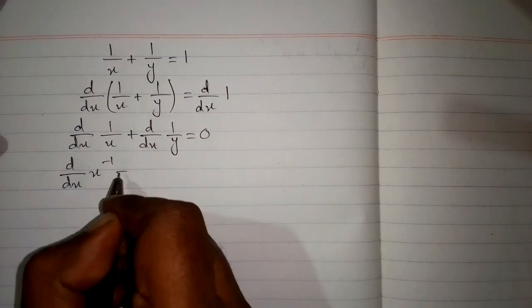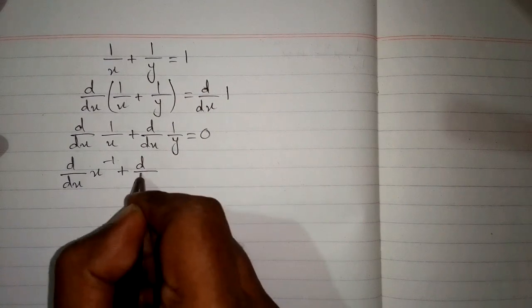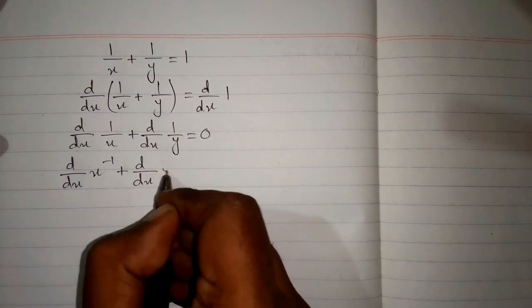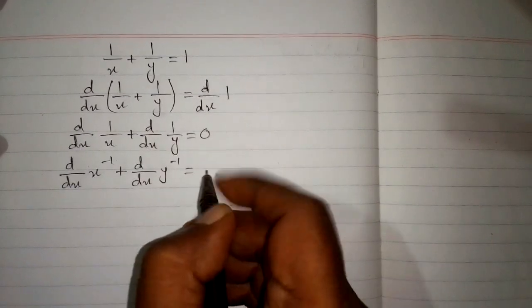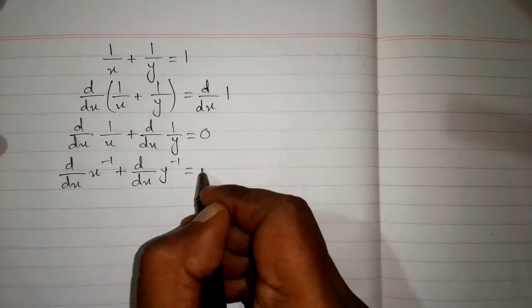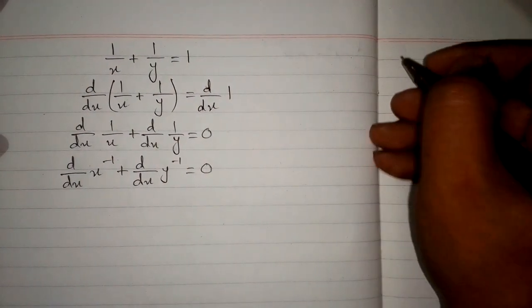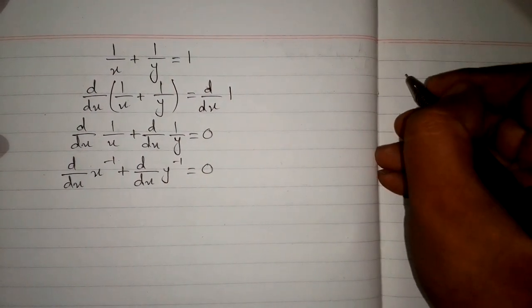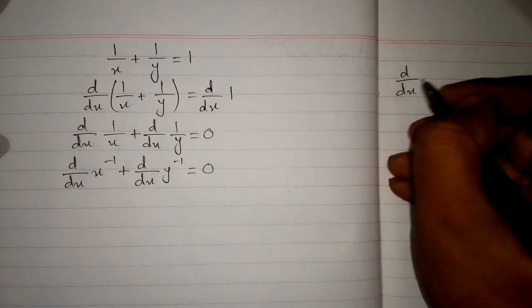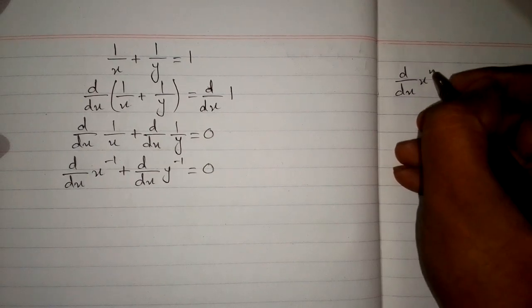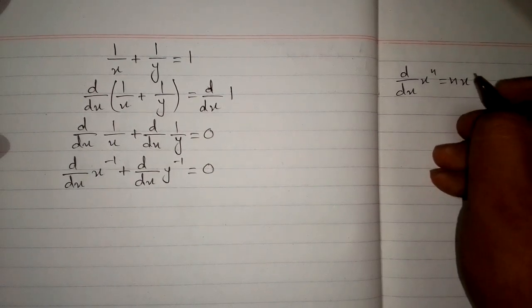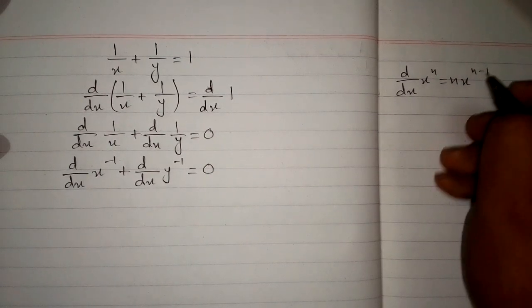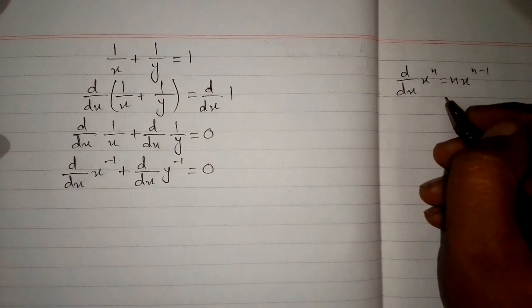Now this can be written as d/dx of x to the power minus 1, plus d/dx of y to the power minus 1, is equal to 0. We know that d/dx of x to the power n is equal to n times x to the power n minus 1. This is the power rule of differentiation.